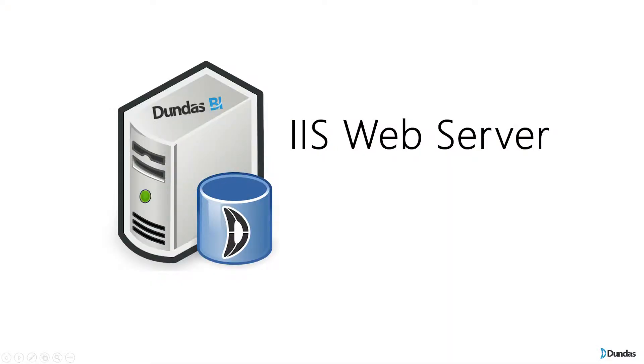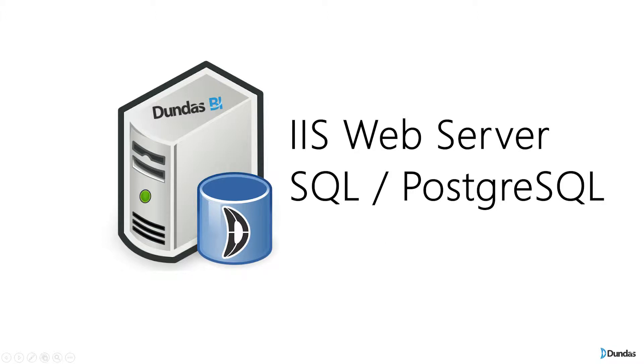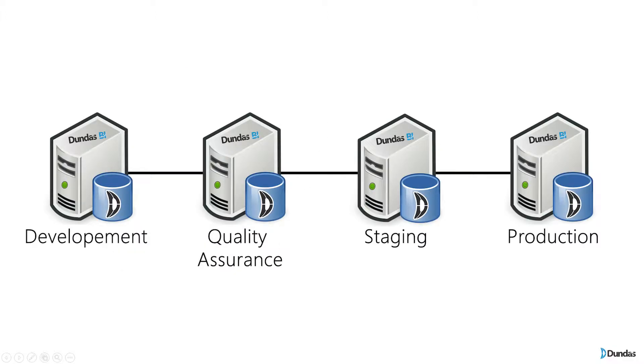In the case of Dundas BI, the architecture is fairly simple: you have an IIS web server and a SQL Server or Postgres backend driving the application. For every step within the N-tier architecture, you're essentially cloning this architectural setup for Dundas BI. It's because of this split architecture that you do have an inherent acceleration of cost — you have to spin up multiple servers each time you add a step in your pipeline, but the more steps you add, the more quality you're going to have.